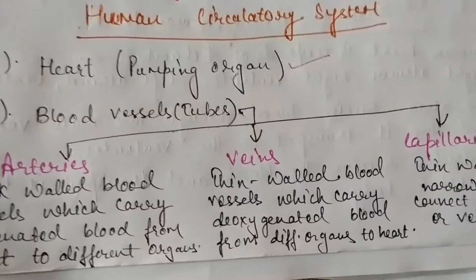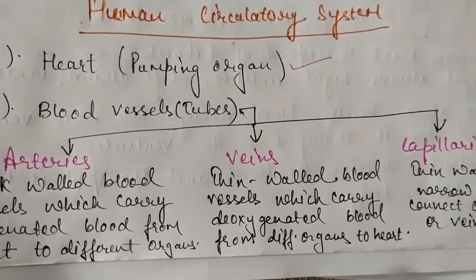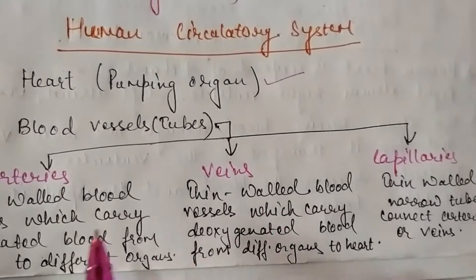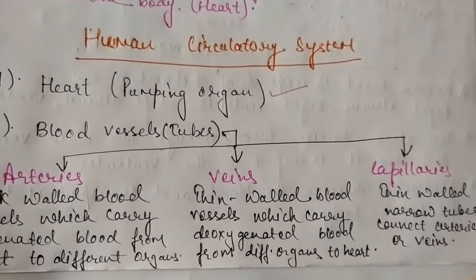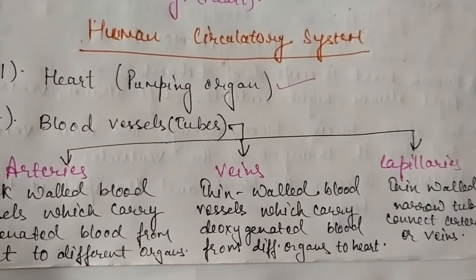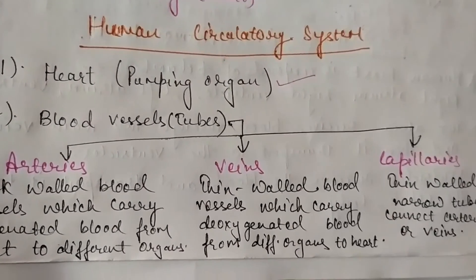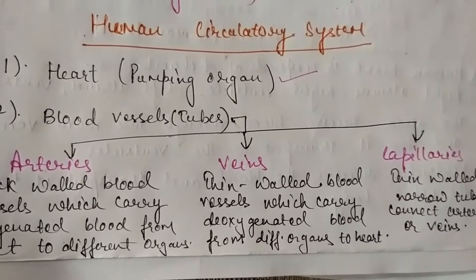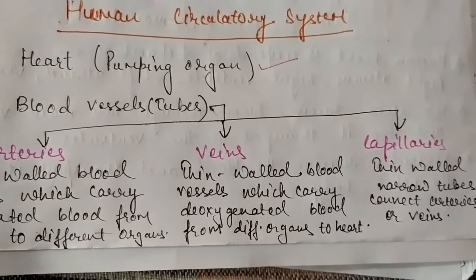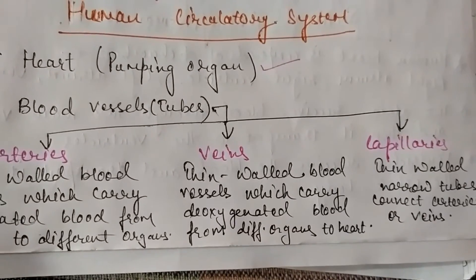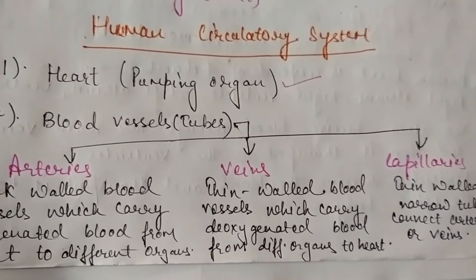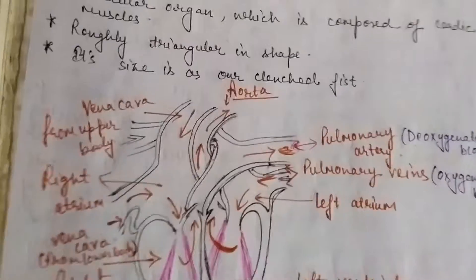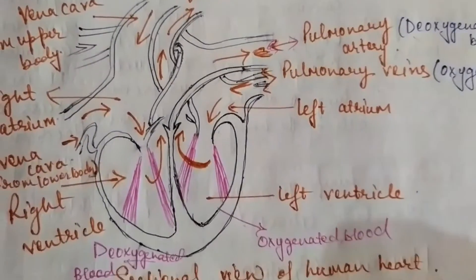Capillaries are also blood vessels. They are very thin-walled tubes that connect arteries and veins. Blood in the arteries is oxygenated, and then through veins it is deoxygenated. Capillaries are thin tubes which connect the arteries and the veins.